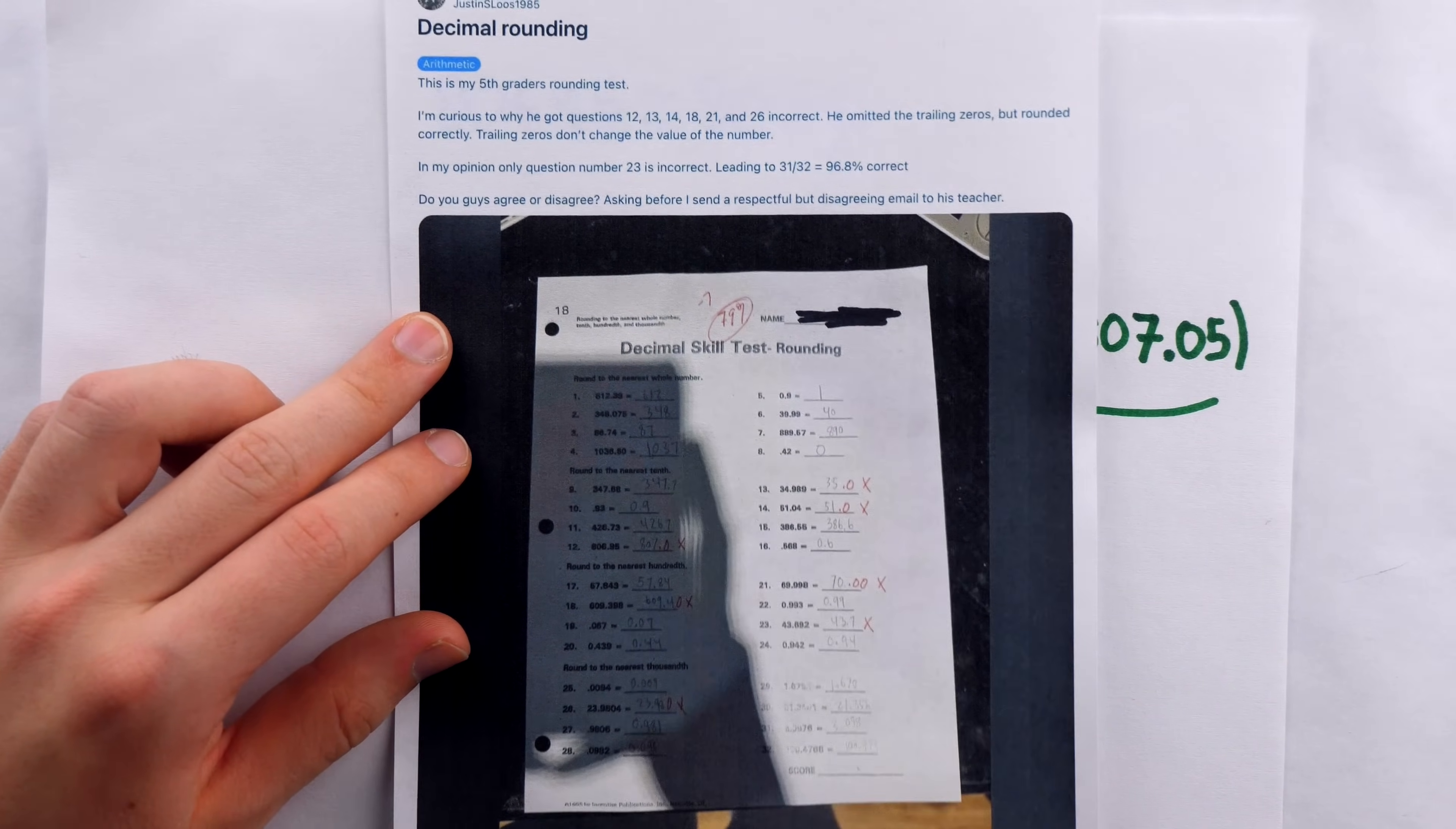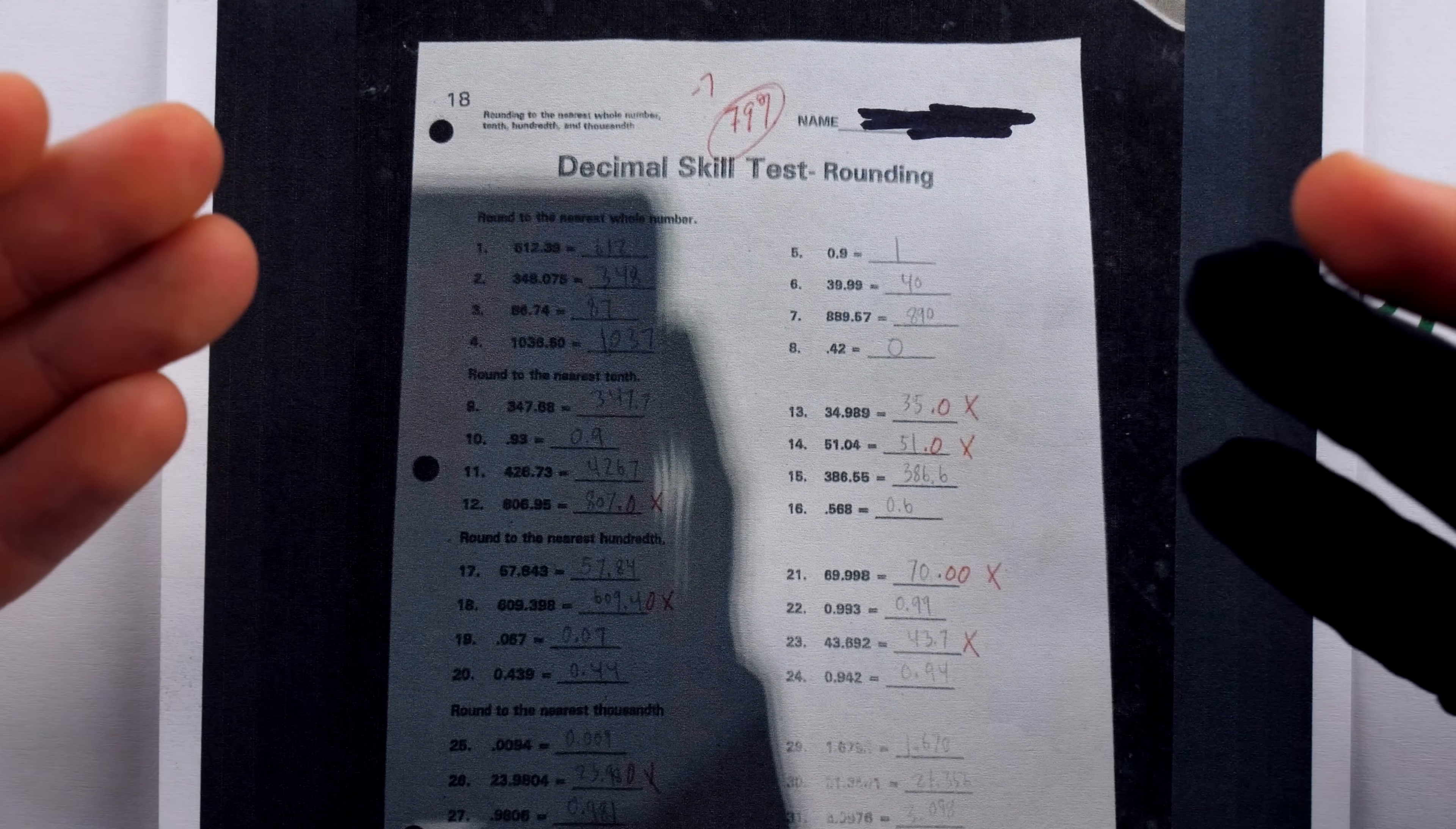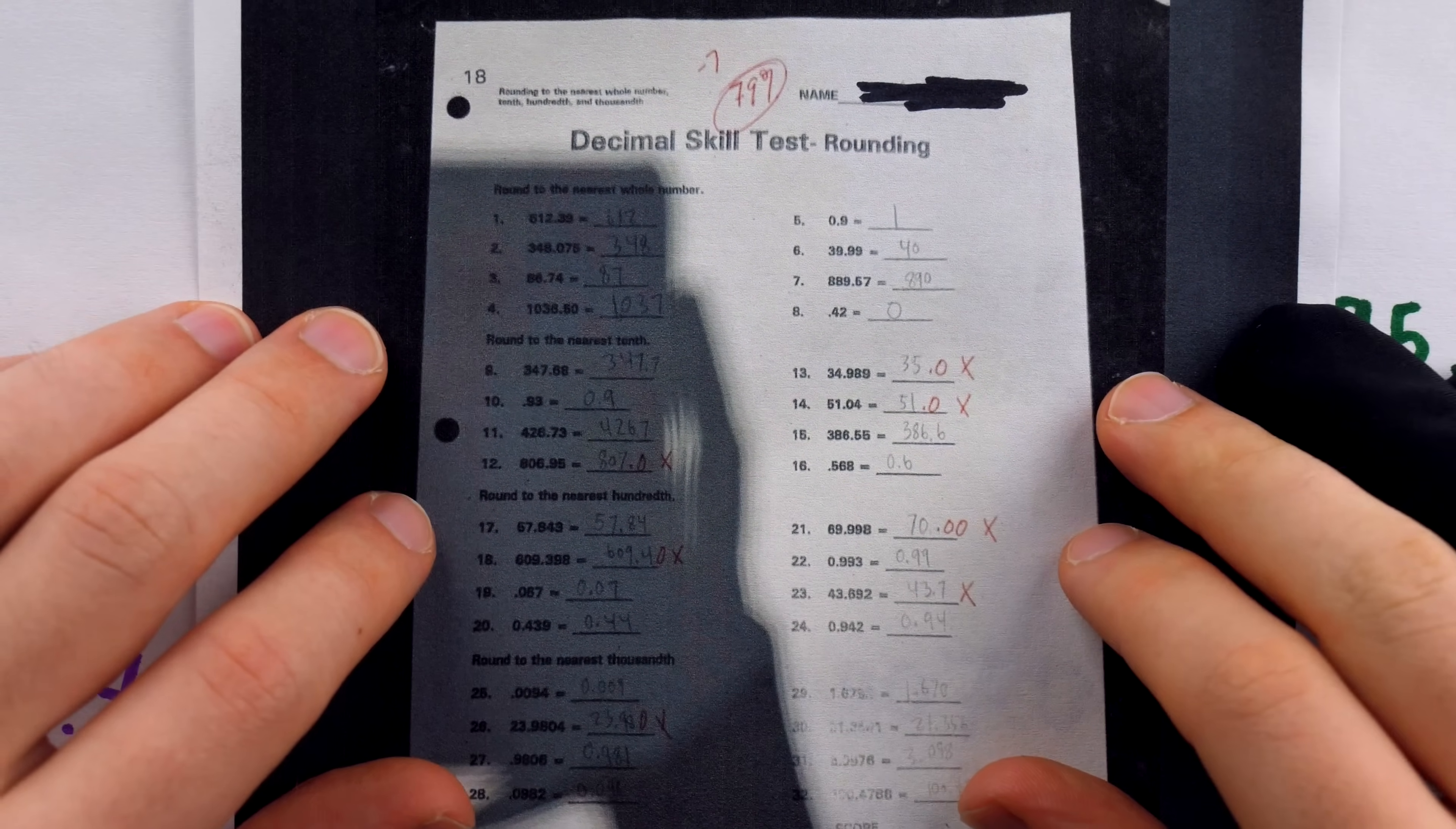So this is why the teacher marked those problems wrong. To round to the nearest tenth, you have to report that tenth, whether it's two tenths, one tenth, or yes, even zero tenths. Now whether or not the grading was fair, taking off a whole seven points which ended up with a final score of 79%, whether or not that's fair is a separate conversation. I can understand why someone would think that this problem where the student just did the rounding wrong should be more penalized than a problem like this where he just didn't write the trailing zeros. But I would say we don't really have the context to make an informed judgment on this matter. We don't know how the unit and these skills were discussed, taught, and practiced.